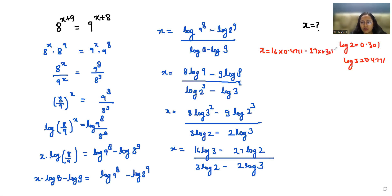By 3 times 0.301 minus 2 times 0.4771. So x equals, when we simplify this, 9.6367.